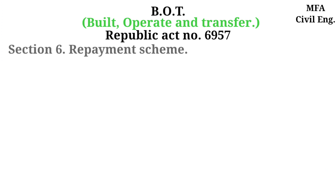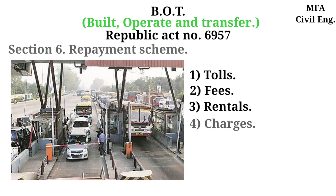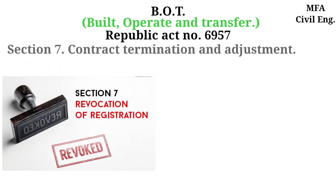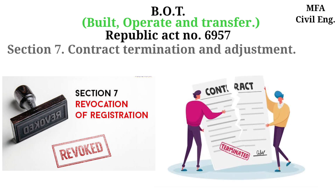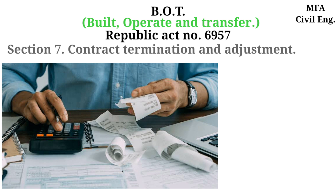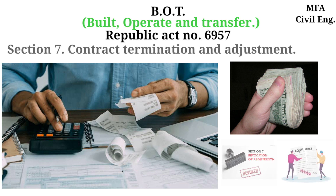Under Section 6, the investment is recovered by tolls, fees, rental, and charges for a fixed term as proposed in the bid, but in no case shall this term exceed 50 years. In case a project is revoked, canceled, or terminated by the government without any fault of the contractor, or by mutual agreement, then the government shall compensate the contractor for its actual expenses spent on the project plus a reasonable rate of return not exceeding what is stated in the bidding document and in the contract as of the date of such revocation, cancellation, or termination.